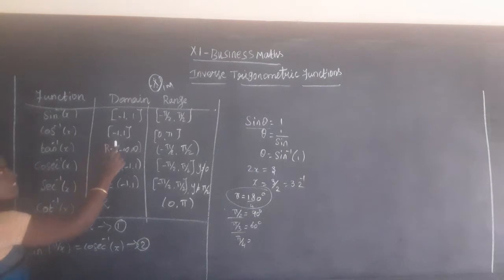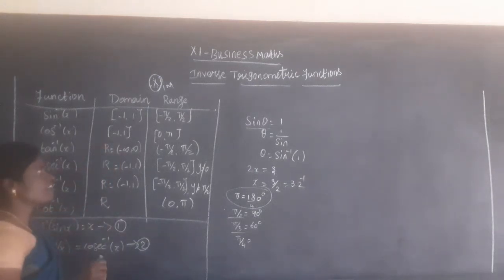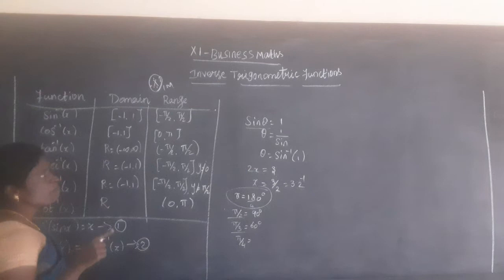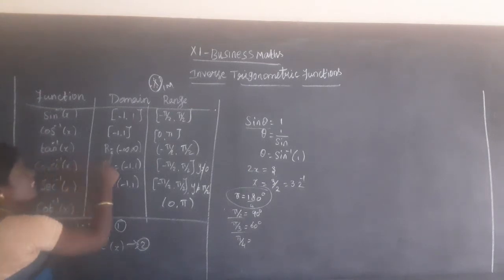Cos inverse of x has range from 0 to π. The tan inverse range is from minus π by 2 to plus π by 2.